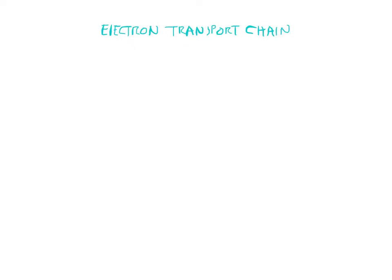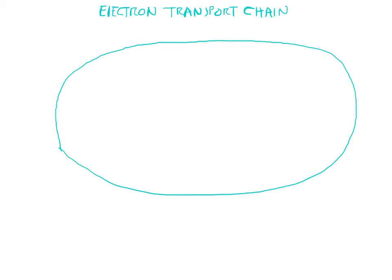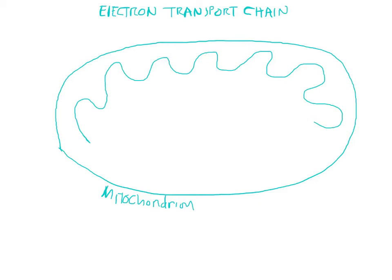We're going to finish our little talk on aerobic respiration with the electron transport chain. It takes place in the organelle known as the mitochondrion. The mitochondrion has an outer membrane, as you can see here, but also an inner membrane that is elaborately folded back and forth to maximize the surface area to volume ratio for the chemical reactions that happen on this inner mitochondrial membrane.